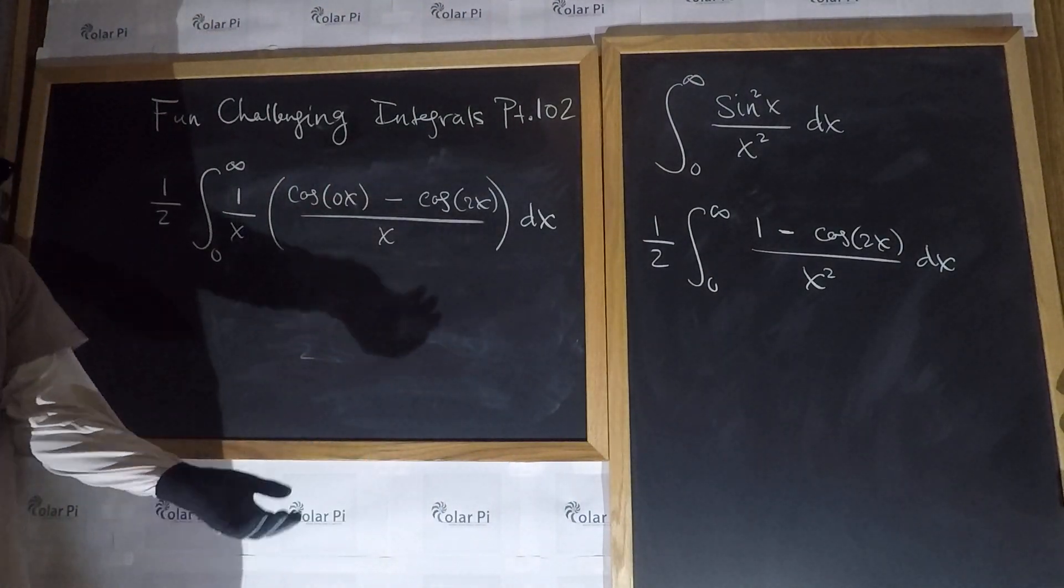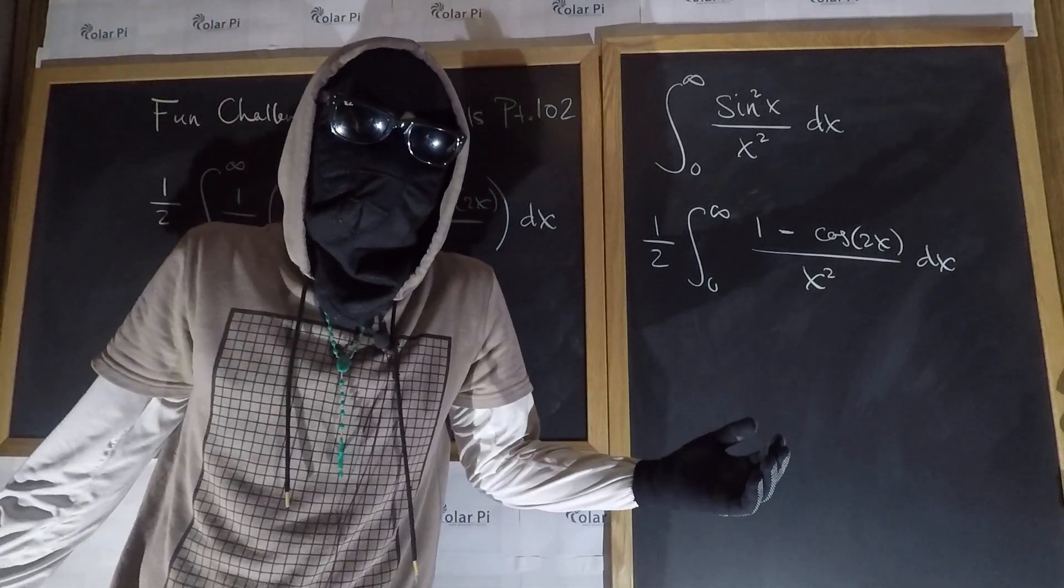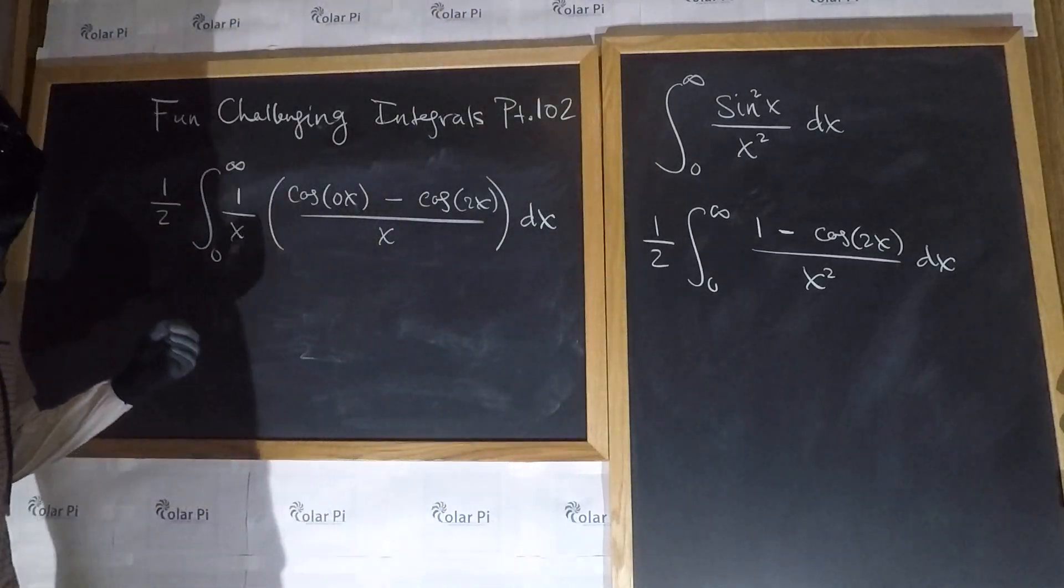And, then, minus cosine of 0x. And, then, minus cosine of 0x and the rest is as I had had before. And, so, we're good. Right? Okay, cool.